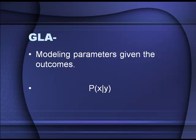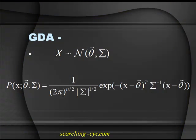So, generative learning algorithms: so far we have been talking mainly about learning algorithms that model the conditional distribution of y given x. Here is another learning algorithm that models the joint distribution of x and y — that is Gaussian Discriminant Analysis.